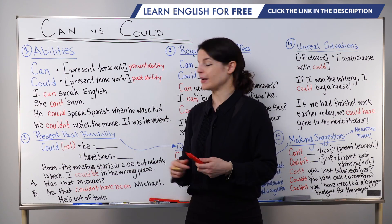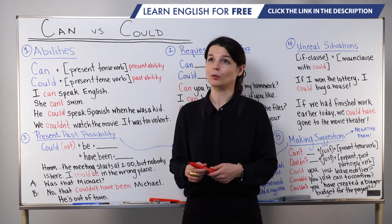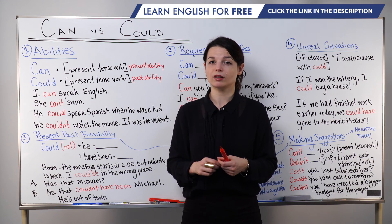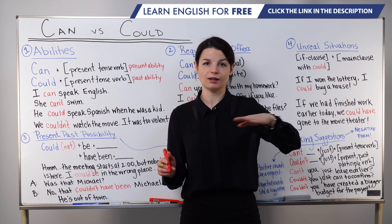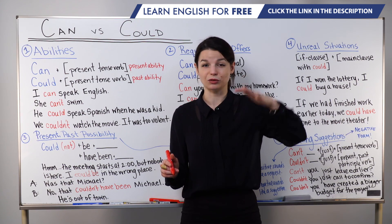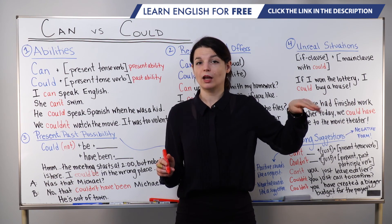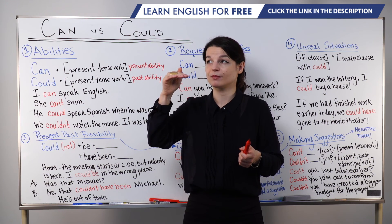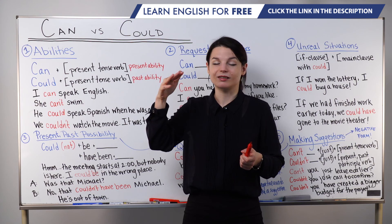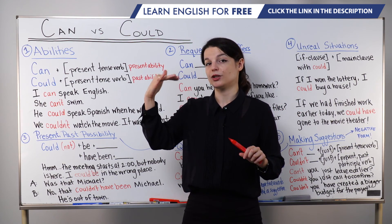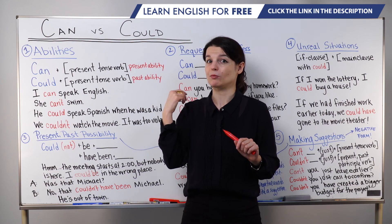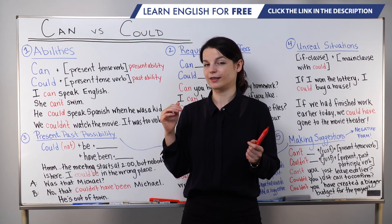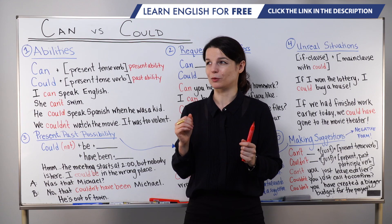You might also hear might used here instead of could: I might be in the wrong place. The difference between might and could is very small in this situation. I could be in the wrong place is very neutral — not a high chance or low chance, just it's possible. If I said I might be in the wrong place, it sounds like there's a higher chance, maybe 50% or 60%. It's not a rule, but might sounds a little more certain than could.